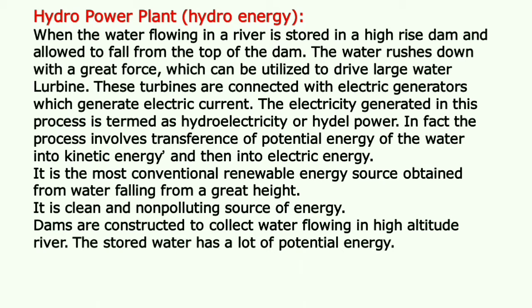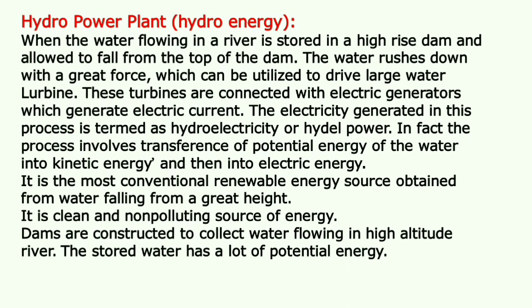Now let's talk about hydro energy using a hydro power plant. When the water flowing in a river is stored in a high raised dam and allowed to fall from the top of the dam, the water rushes down with great force which can be utilized to drive large water turbines. These turbines are connected with electric generators which generate electric current. The electricity generated in this process is termed as hydroelectricity or hydro power. The process involves transference of potential energy of the water into kinetic energy and then into electric energy. It is the most conventional renewable energy source obtained from water falling from a great height.